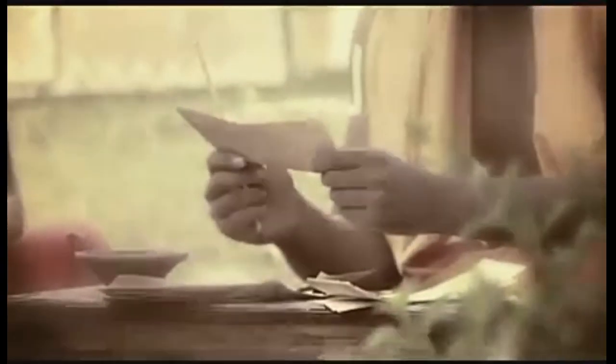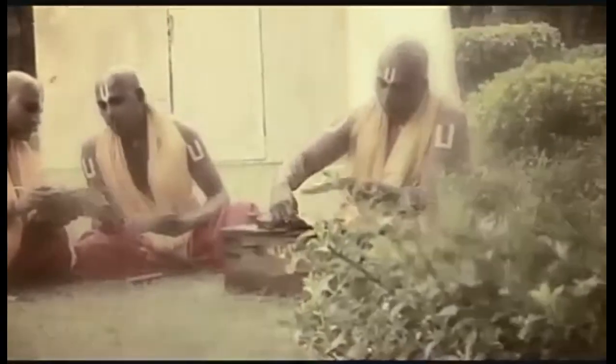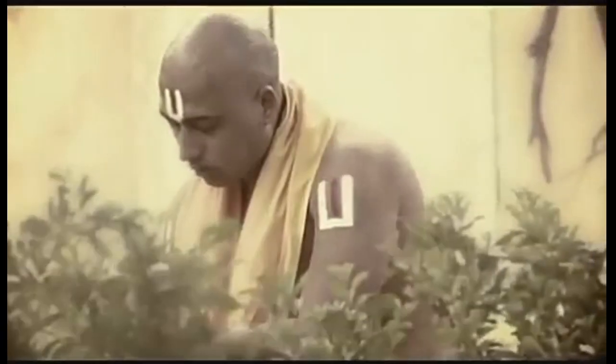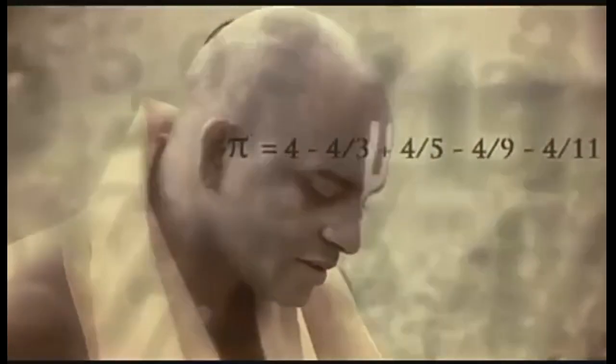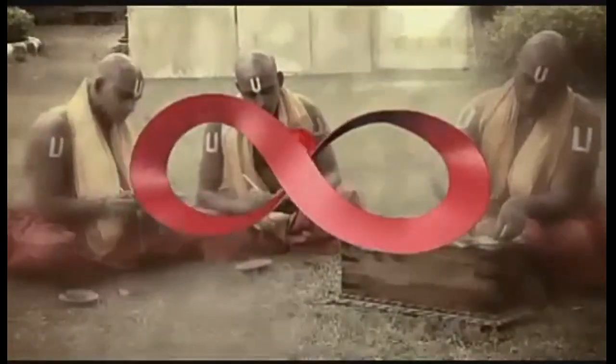Madhava also worked out that by successively adding and subtracting different odd number fractions to infinity, he could hone in on an exact formula for π. And through his application of this series, Madhava obtained a value for π correct to an astonishing 13 decimal places. This series is today called the Madhava-Leibniz series.